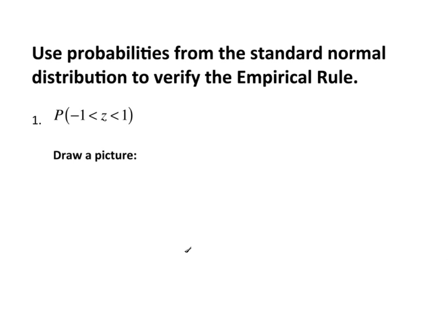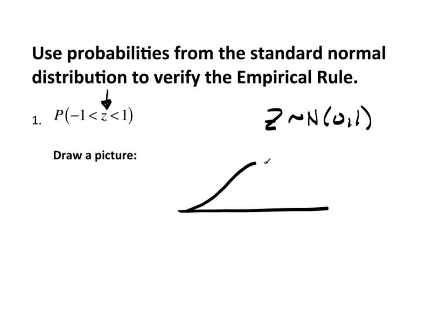I said earlier that the empirical rule is based on the standard normal. So what we're going to do here is actually verify the empirical rule using the standard normal distribution. Whenever you see Z, it is very commonly used for a standard normal distribution — Z is distributed as normal(0, 1). I want to find the probability that negative 1 is less than Z, which is less than 1. There's the probability statement, and if I draw the picture, I'm looking for that area right there.